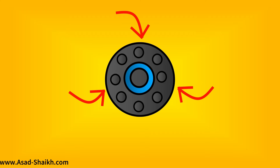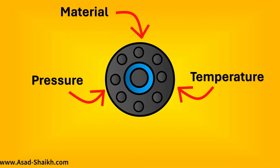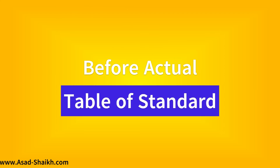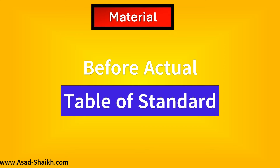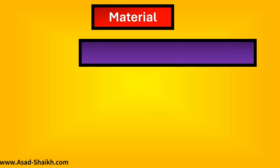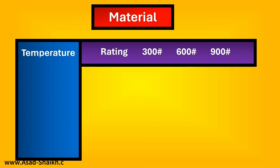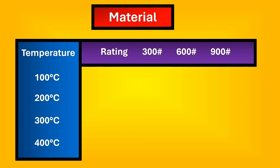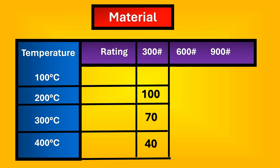So the three parameters are: material, pressure, and temperature. To use the ASME table, first identify the material to determine which table to refer to. The table has various ratings across the top — for example 300, 600, and 900 pound rating — and temperature along the axis, such as 100 and 200°C. For a 300 rating at 200°C, the table might show 100 bar of maximum pressure the flange can withstand.